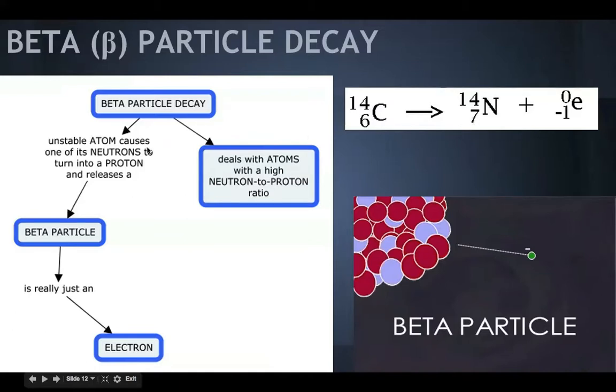It turned into a proton and released, as you see our flow chart, and released a beta particle, which is really just an electron. And that's what this electron is right here. This E stands for an electron. So it broke down, it added a proton, and then released an electron. And it flies off of this particle pretty much at the speed of light really fast. And this is beta particle decay, which is really just an electron again.